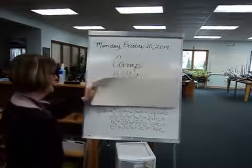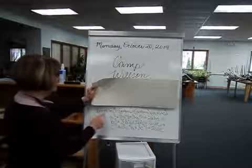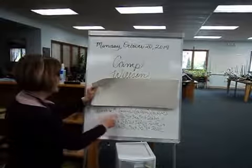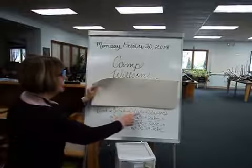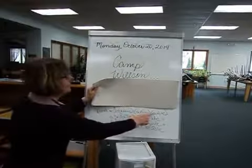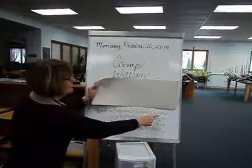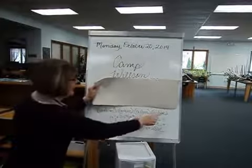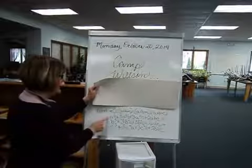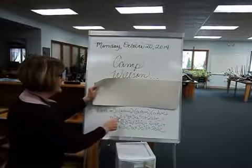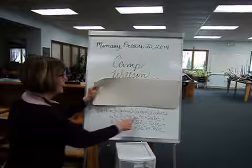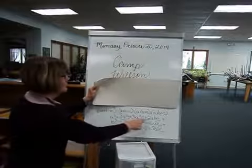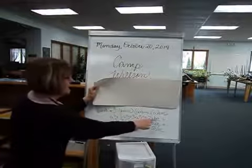The trinomial: a plus b plus c, cubed, equals a plus b plus c, times a plus b plus c, times a plus b plus c, equals a cubed plus 3 a squared b plus 3 a squared c plus 2abc.